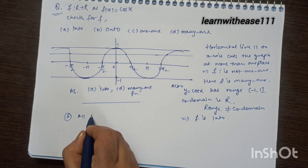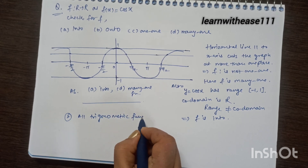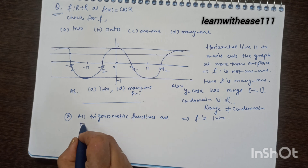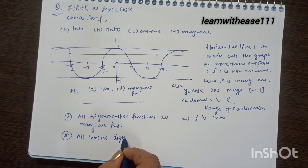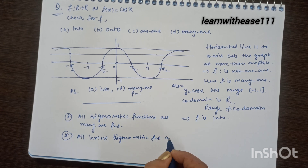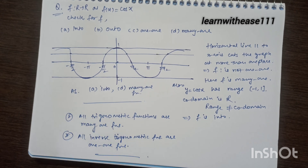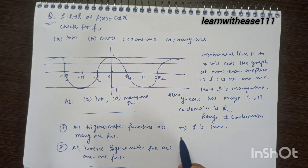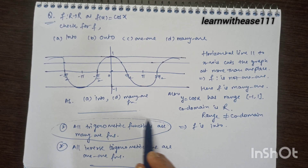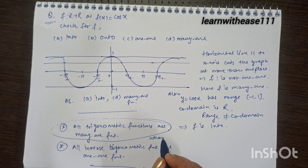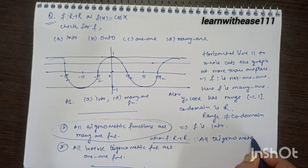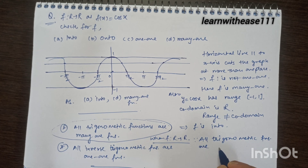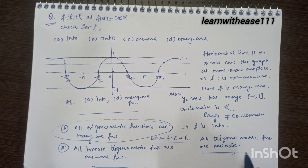One important rule to remember: all trigonometric functions are many-one if the domain is the whole real number set, because they are periodic. All inverse trigonometric functions are one-one. When f is defined from R to R, all trigonometric functions will be many-one. If we restrict the domain to a fixed specific period, the function won't repeat and will be one-one.